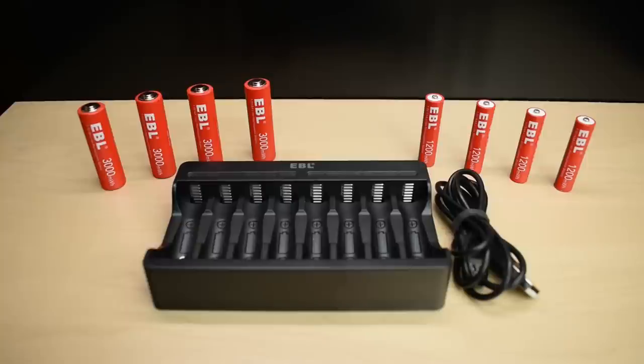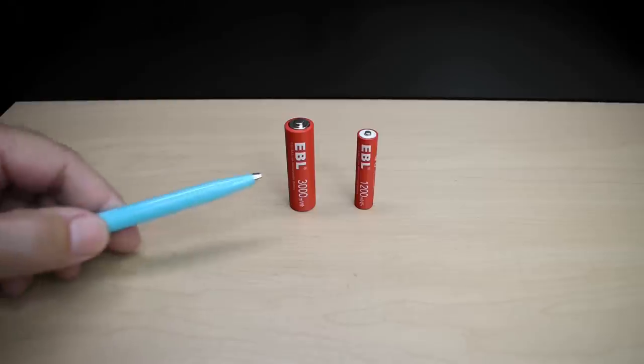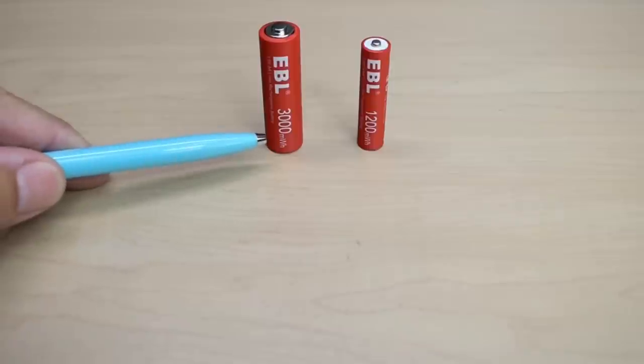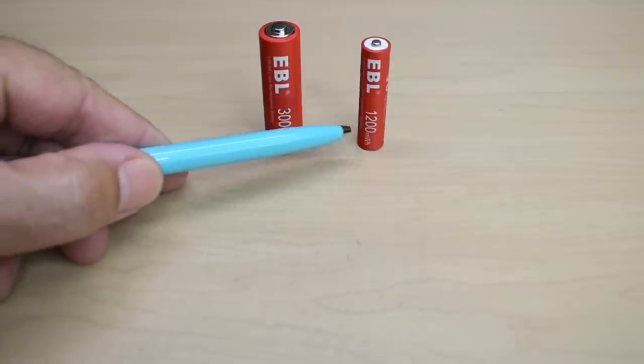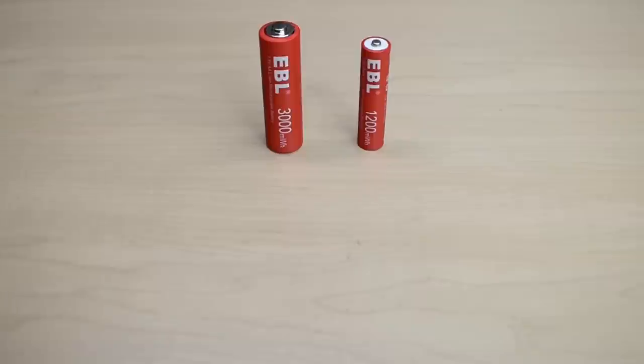Let's take a closer look at each battery. You can see it says 3000 mWh for the AA and the AAA is 1200 mWh.